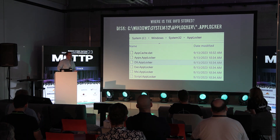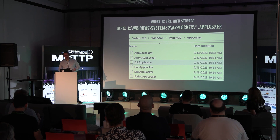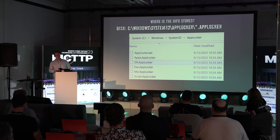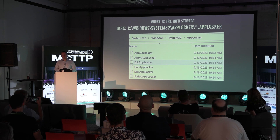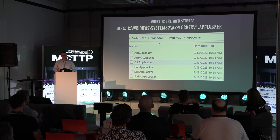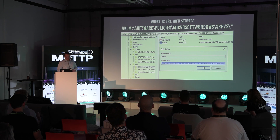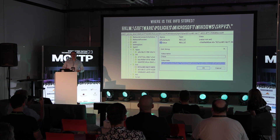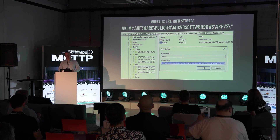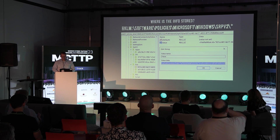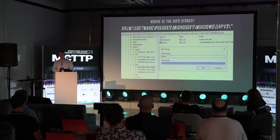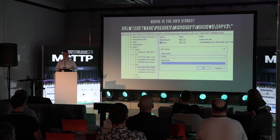Where is the info stored? When you deploy AppLocker policies, it generates files under System32\AppLocker - these are the rule files in a special format. My preferred method is to go into the registry instead, under the SRP2 key, which has one key for each section. Inside each key, there's one GUID per rule, and clicking on the value shows the XML for that rule.